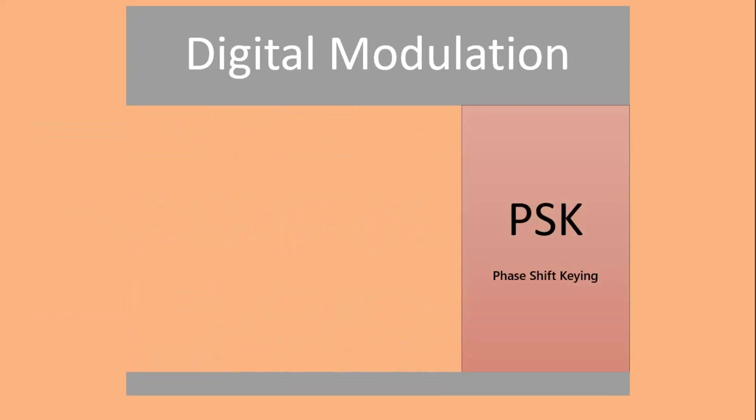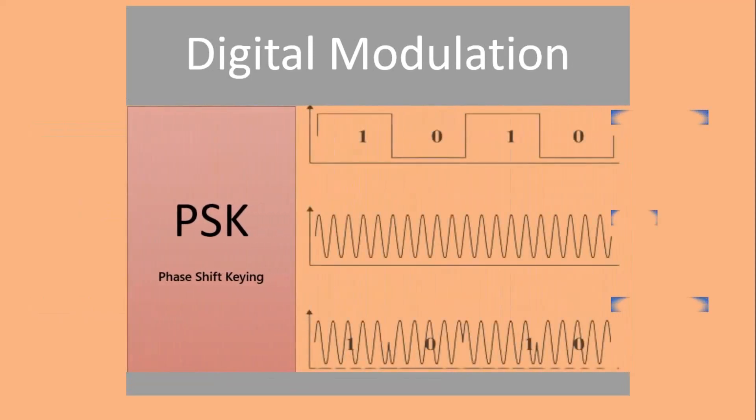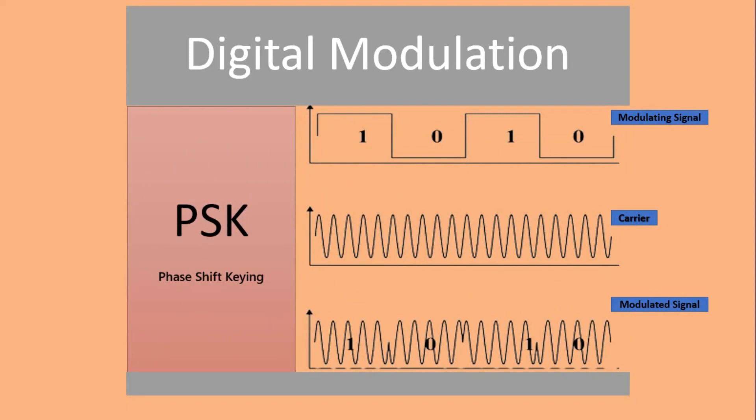Similarly in PSK or phase shift keying, the phase of the modulated signal changes according to the message signal. Whenever the amplitude of the modulating signal is one, the modulated signal has one phase. But whenever the amplitude of the modulating signal changes from one to zero, the modulated signal also changes its phase.